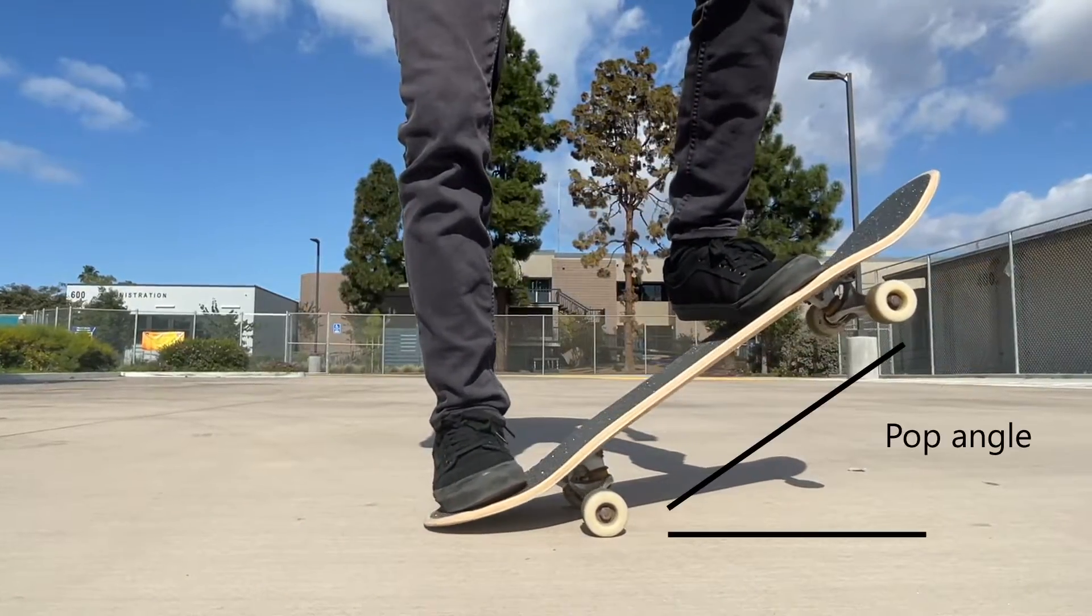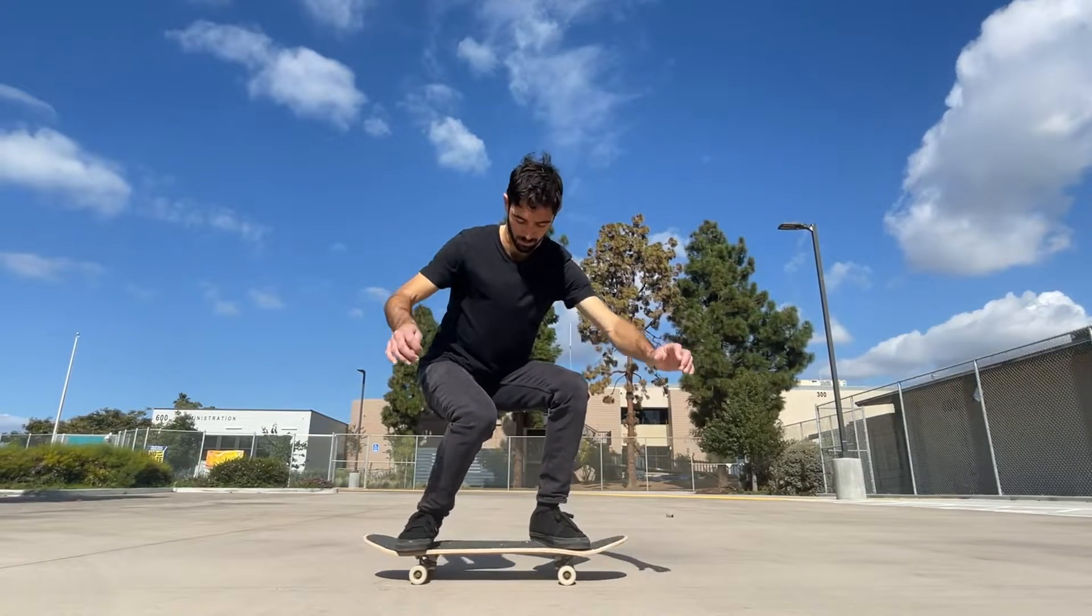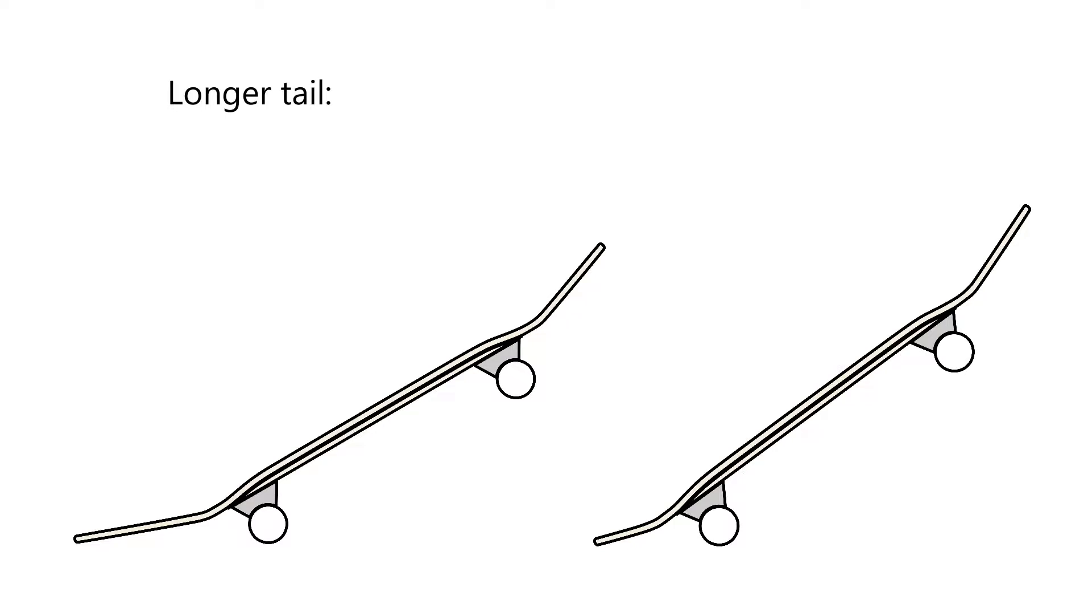A longer tail will also reduce the pop angle, which is the angle your board makes with the ground when you pop it up during an ollie. This can create a more responsive feel where it takes less effort to do tricks and pivot.